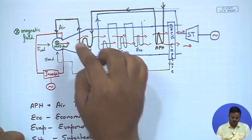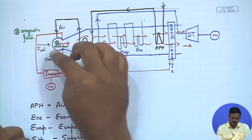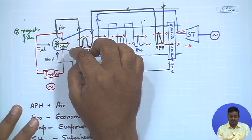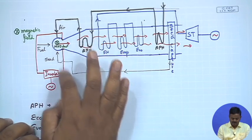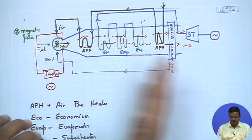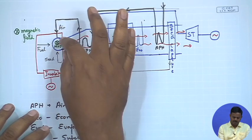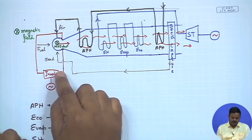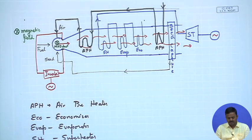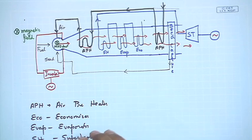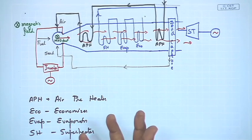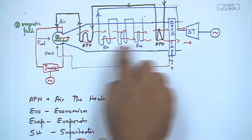To summarize the schematic: we have an MHD duct with combustion gases at very high temperature; a magnetic field is applied perpendicular to the plane; the hot ionized seeded gas moves in the x-direction; the DC voltage is measured across the y-direction; an inverter converts it to AC. Once the gas cools below 2000 K and loses its ionization potential, it is used as a heat source in the boiler and for air preheating.